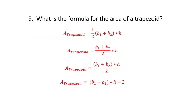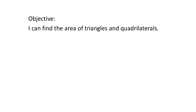So here's the area of a trapezoid, written in four different ways. You don't have to memorize all four — if you made yourself very familiar with one, that would be the most helpful. You could just cut it in half and arrange it so it creates a parallelogram — that's why it's adding the two bases. Just choose one that you like the best. So here's our objective: I can find the area of triangles and quadrilaterals.